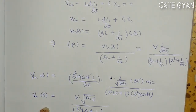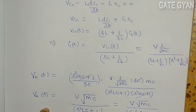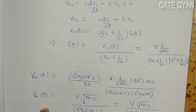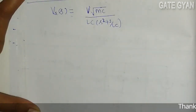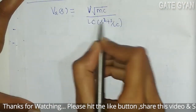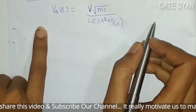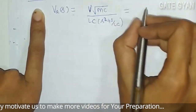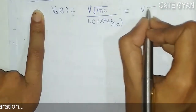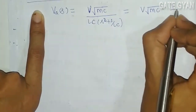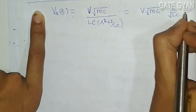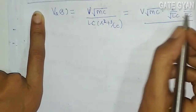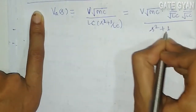Now, if I take LC as a common factor in the denominator, the expression becomes VA(S) = V·√(M/C) multiplied by (1/√(LC)) upon (S² + 1/LC). On further simplification, taking 1/√(LC) out, VA(S) = V·√(M/L) · (1/√(LC)) upon (S² + 1/LC).